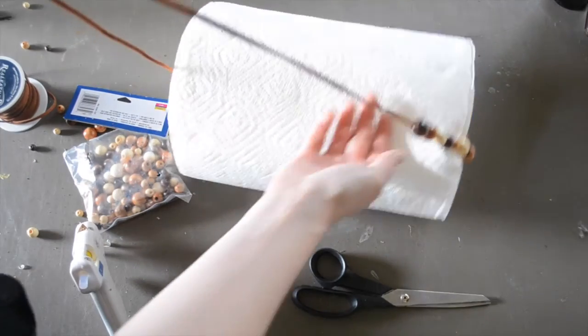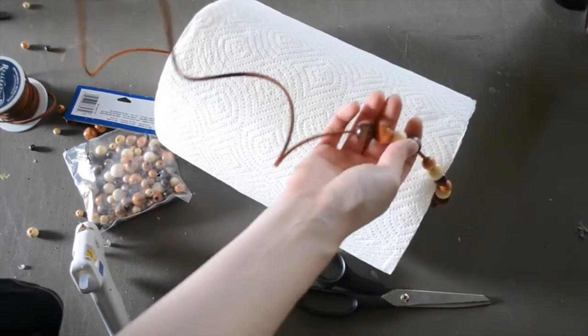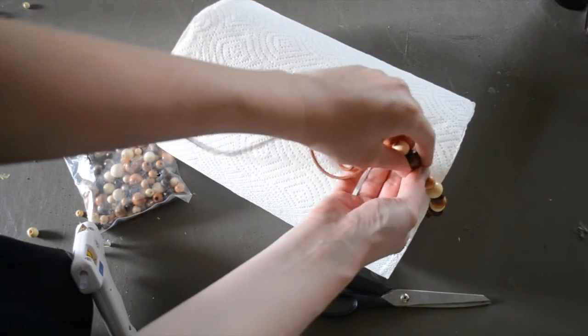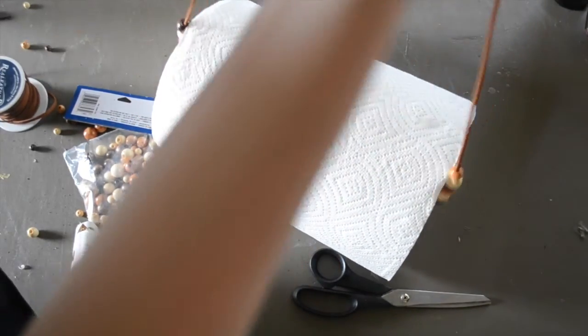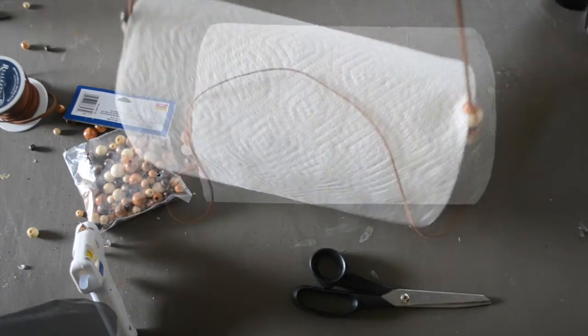And there we go. And now you pull up on your dowel. And now you're going to take half of your beads from this side and you're going to pull them over to the other side. And now you have this super cute wooden bead paper towel holder.